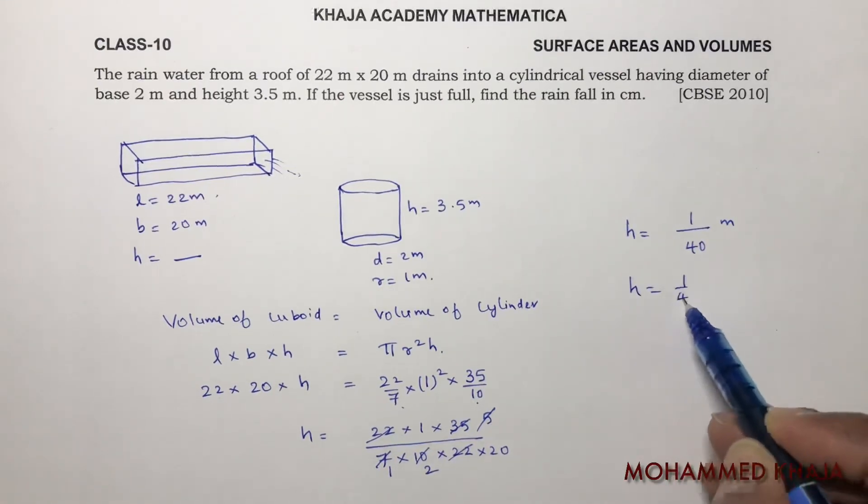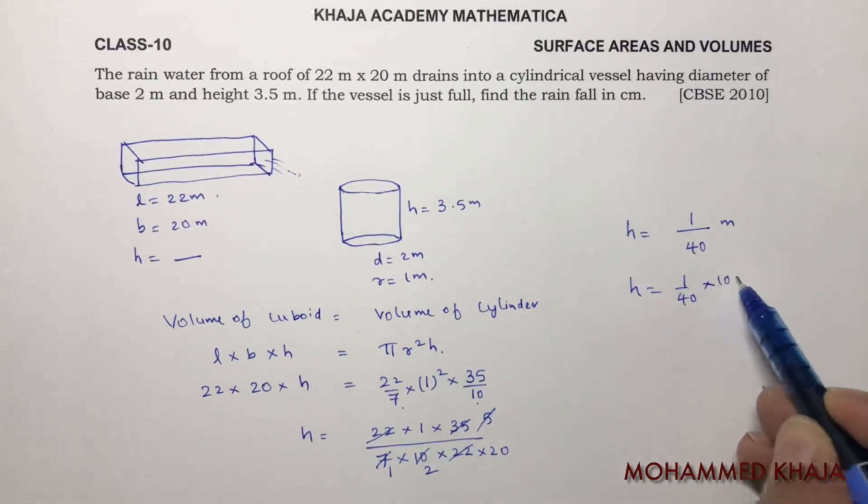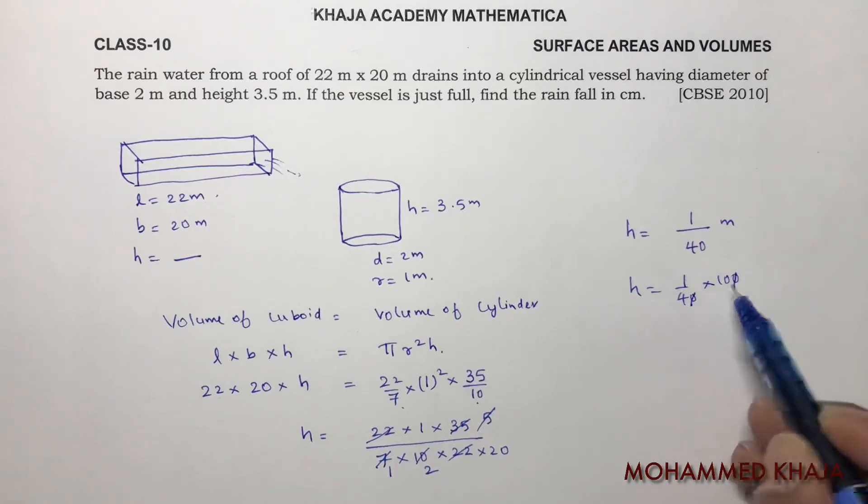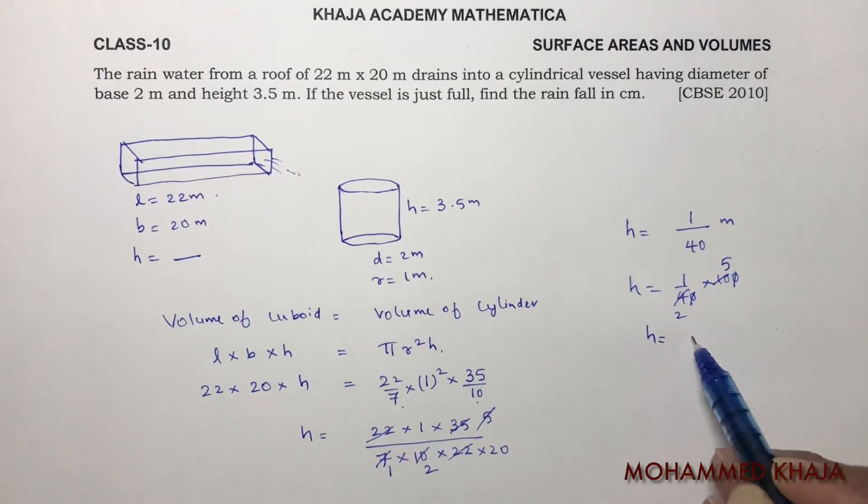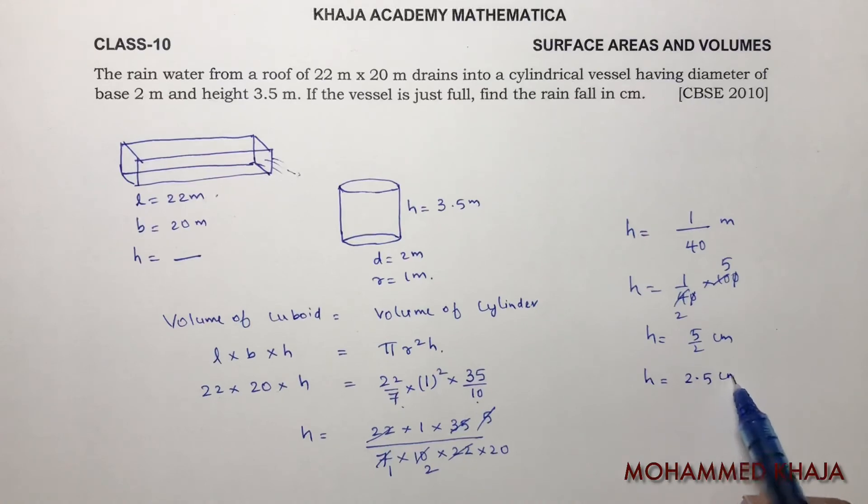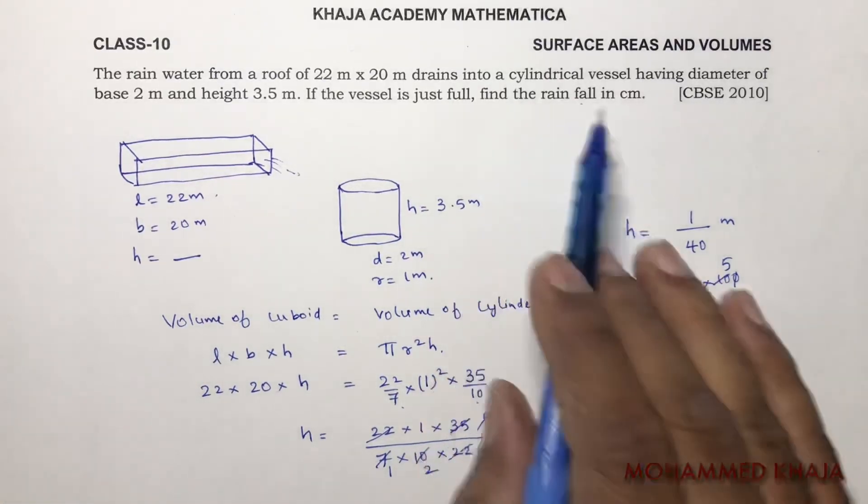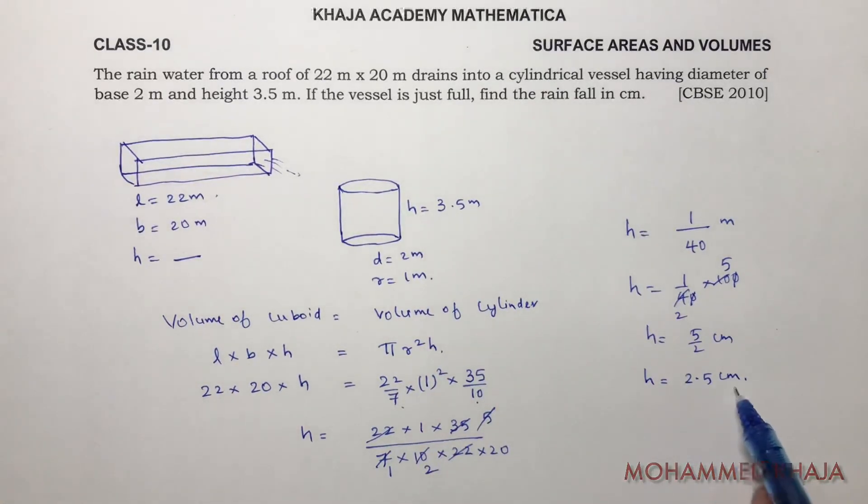1/40 meter. 1 meter is 100 centimeters, so this becomes 100/40 which simplifies to 5/2 centimeters, which is 2.5 centimeters. Therefore, the rainfall is 2.5 centimeters.